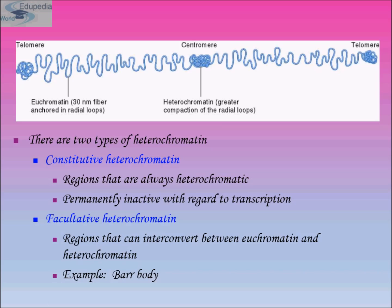Facultative heterochromatin refers to regions that can interconvert between euchromatin and heterochromatin; an example is the Barr body. Facultative heterochromatin is the result of genes that are silenced through mechanisms such as histone deacetylation or piRNA through RNA interference. It is not repetitive and shares the compact structure of constitutive heterochromatin. However, under specific developmental or environmental signalling cues, it can lose its condensed structure and become transcriptionally active.